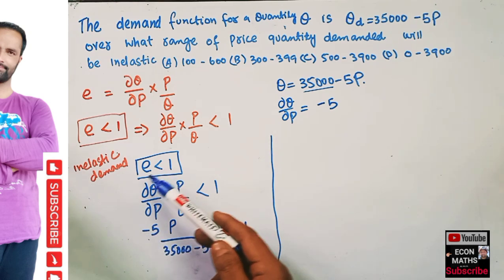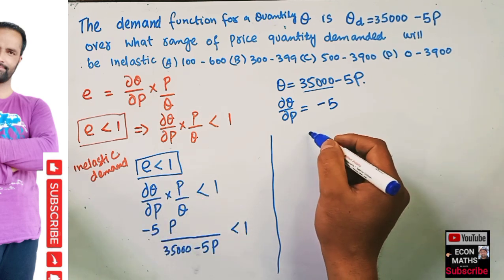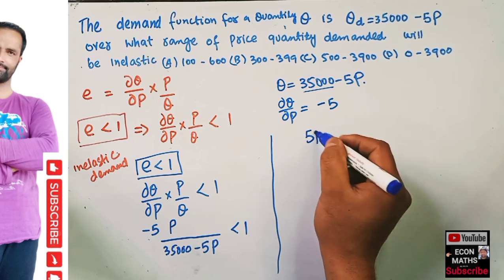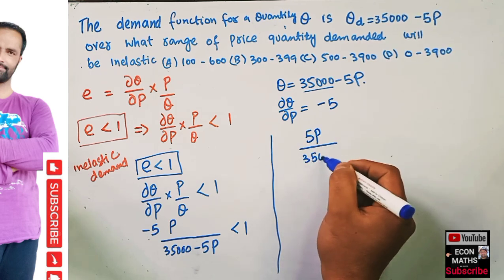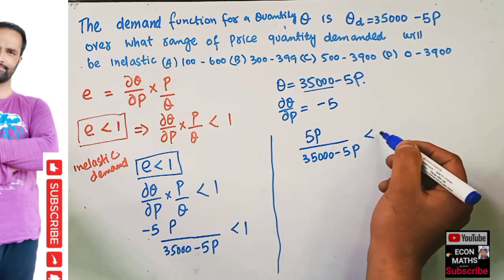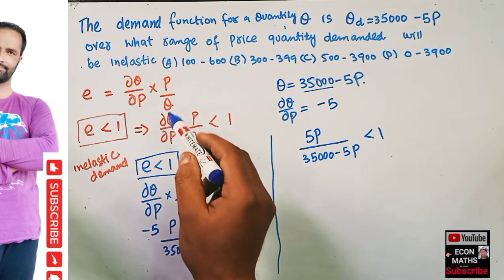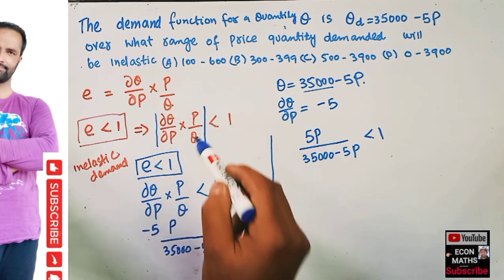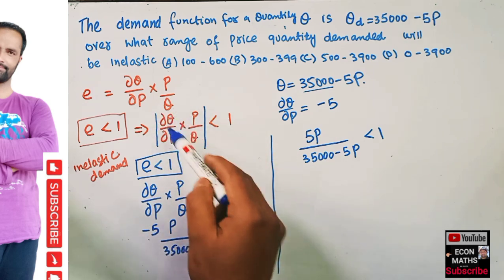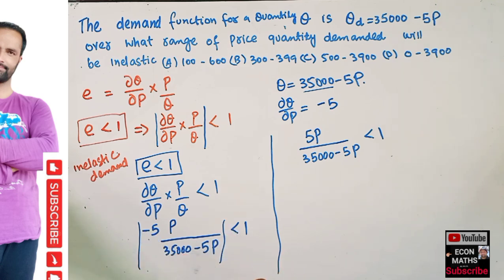Since we are taking the absolute value of elasticity, the negative sign vanishes. So the absolute value of 5P upon (35,000 minus 5P) should be less than 1. Taking the absolute value removes the minus sign, giving us positive 5 in the numerator.